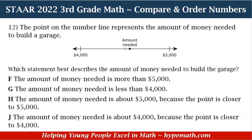Question 12: the point on the number line represents the amount of money needed to build a garage. Which statement best describes that amount? Is it F, the amount is more than $5,000? G, the amount is less than $4,000? H, the amount is about $5,000 because the point is closer to $5,000? Or J, the amount is about $4,000 because the point is closer to $4,000?